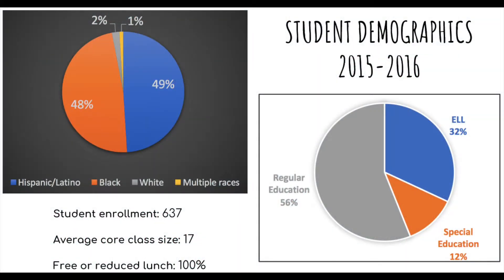Boswell Elementary School student demographics for 2015-2016 include 637 students with an average class size of 17. 100% of students receive free or reduced lunch. The majority of the school is Black and Hispanic, with a small percentage of white students and students of multiple races. 32% of students receive ELL instruction, 12% are in special education, and the remaining 56% are in regular education courses.